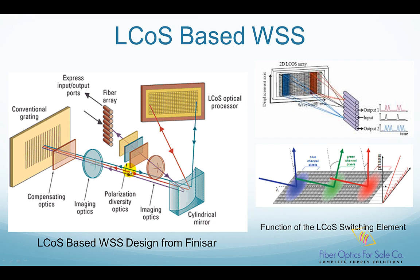So after passing through the second imaging optics, then reflected by the cylindrical mirror, the light is now focused on the liquid crystal on silicon chip surface. However, different wavelengths are focused on different parts. As discussed earlier, the liquid crystal on silicon chip reflects light to different vertical angles by applying different voltage patterns to the liquid crystal cells. So blue light is reflected at angle beta 1 and red light is reflected at angle beta 2. Thus, when the light traces back through all the elements, it gets focused into a different output port depending on the reflection angle beta. This whole liquid crystal on silicon switching idea is simplified and summarized in this illustration.